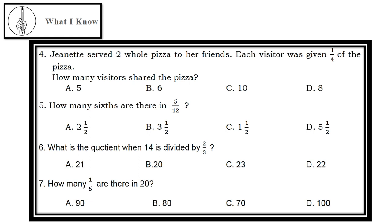Number 5: How many sixths are there in 5/12? A. 2½, B. 3½, C. 1½, D. 5½.